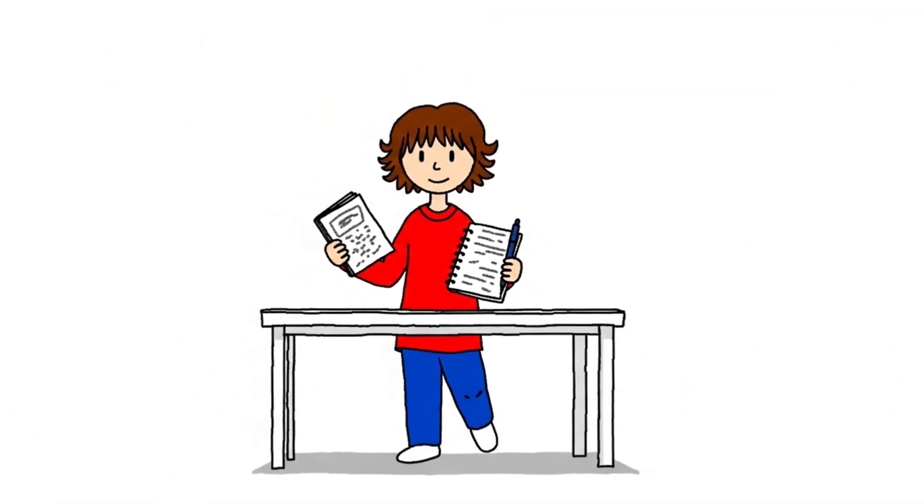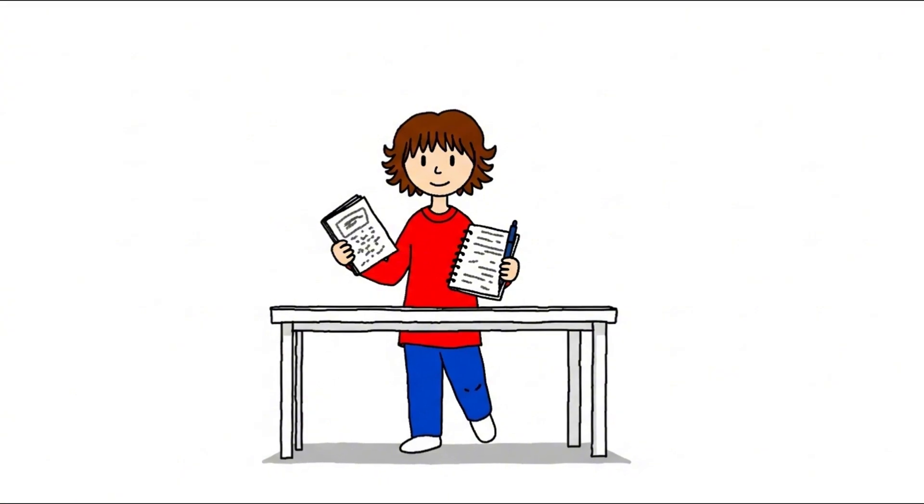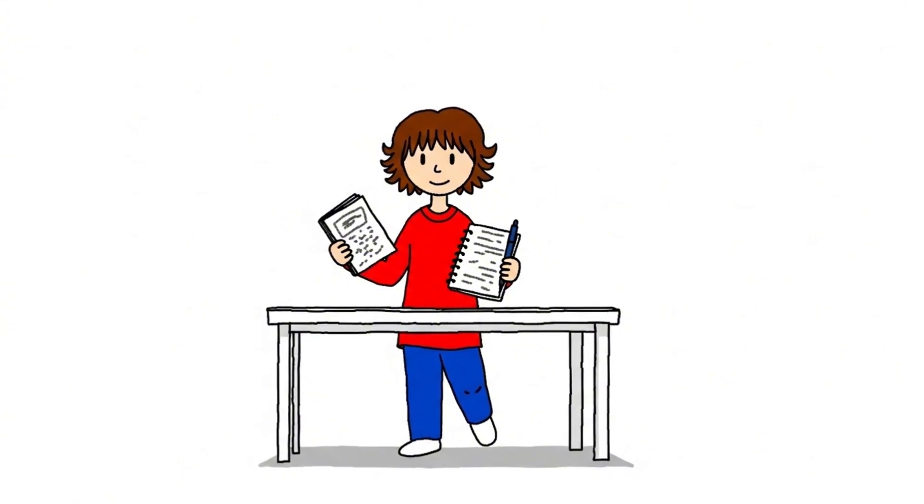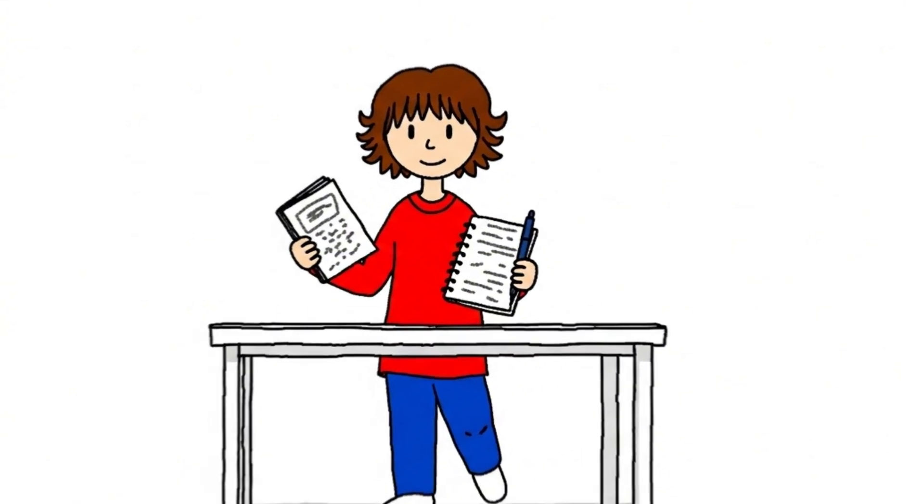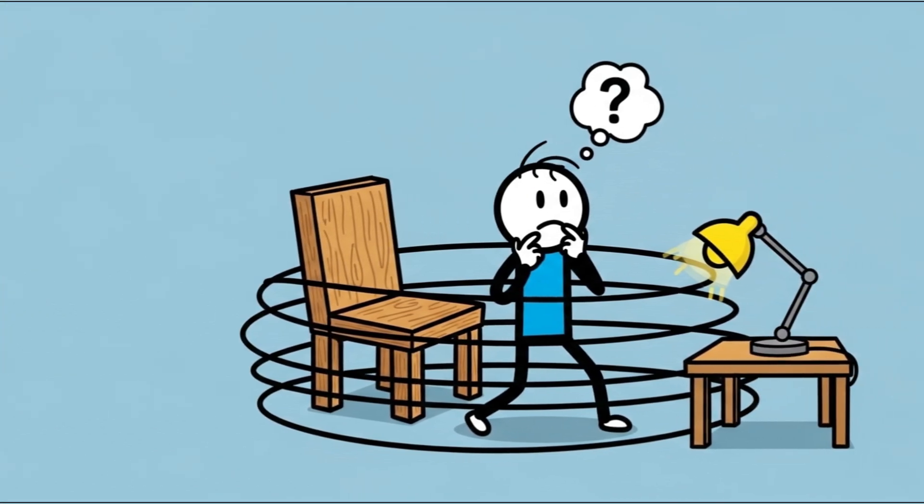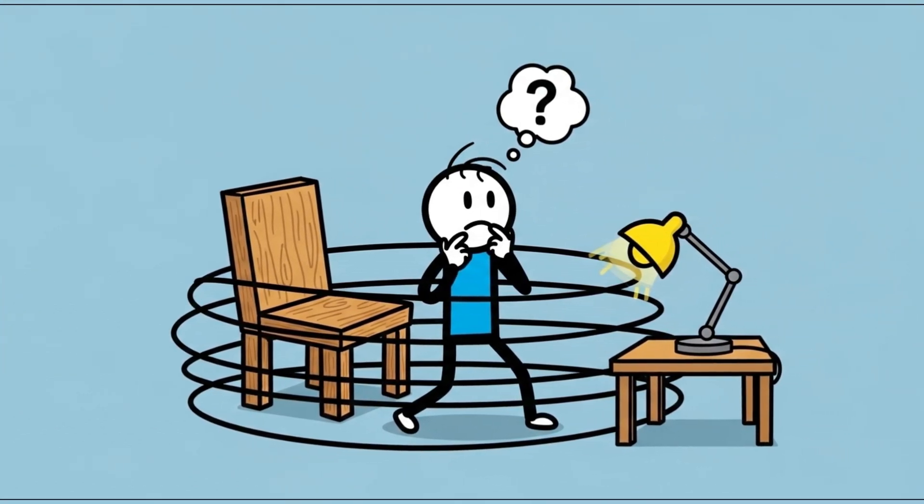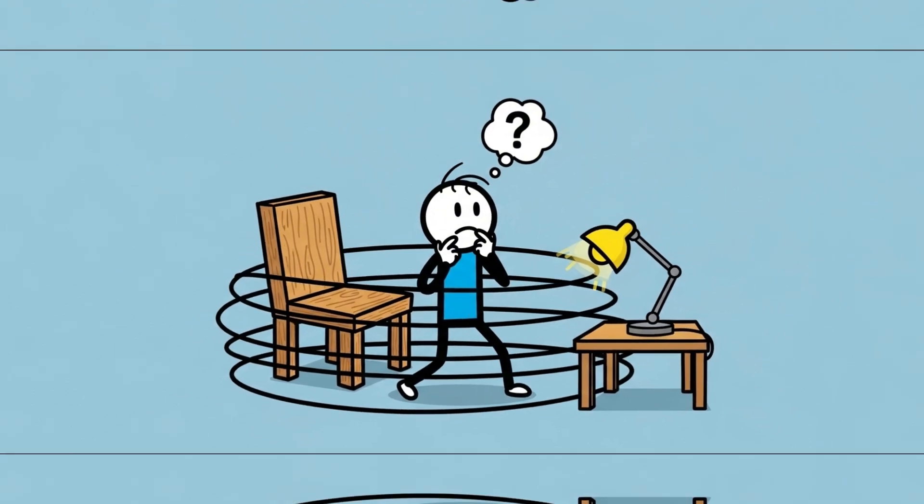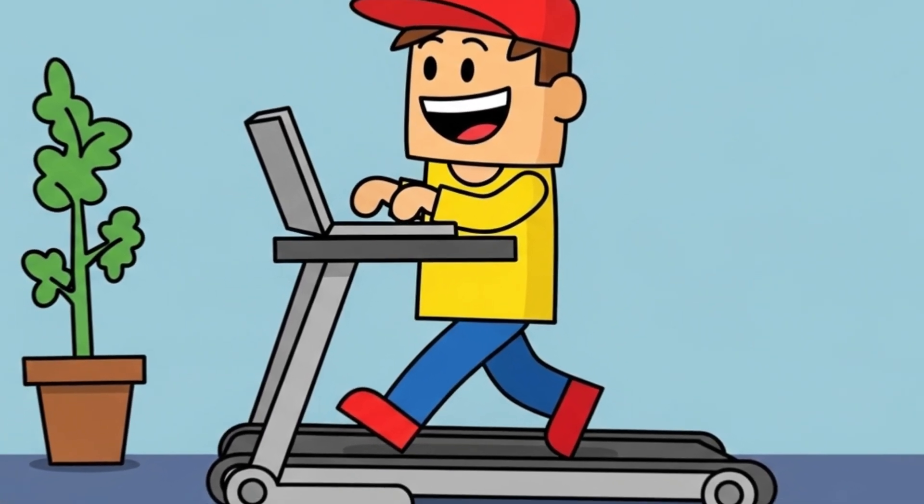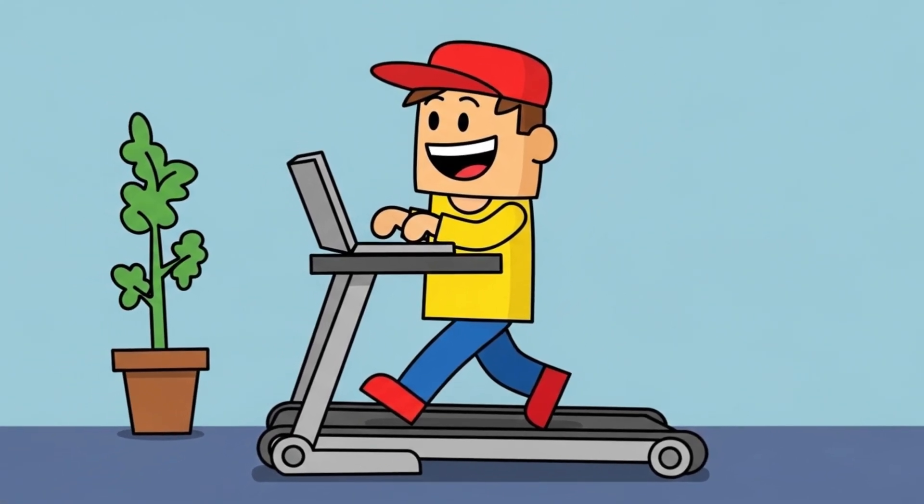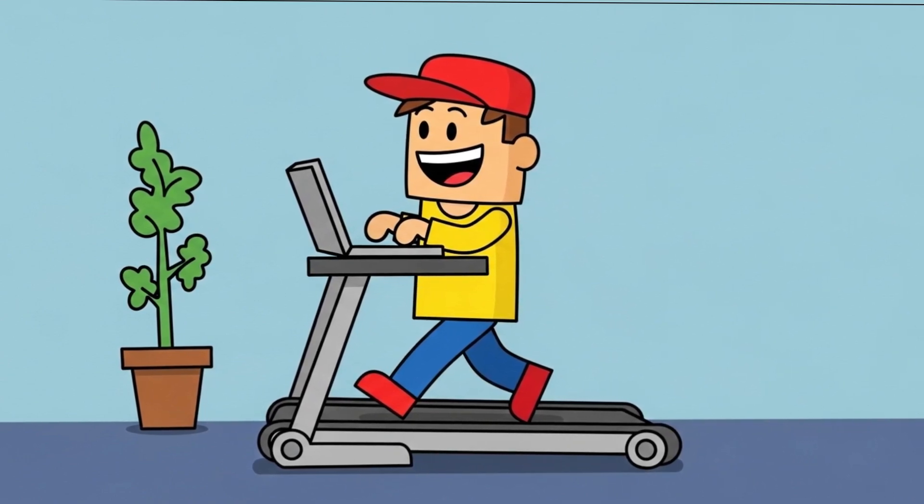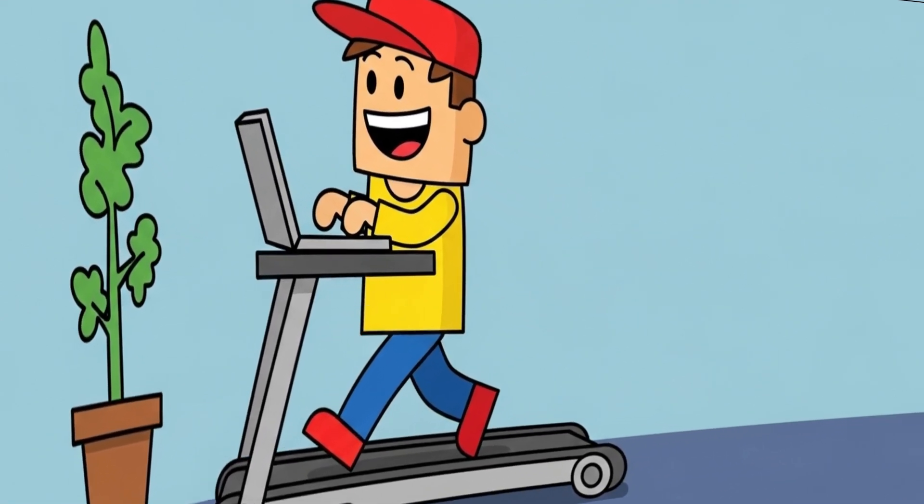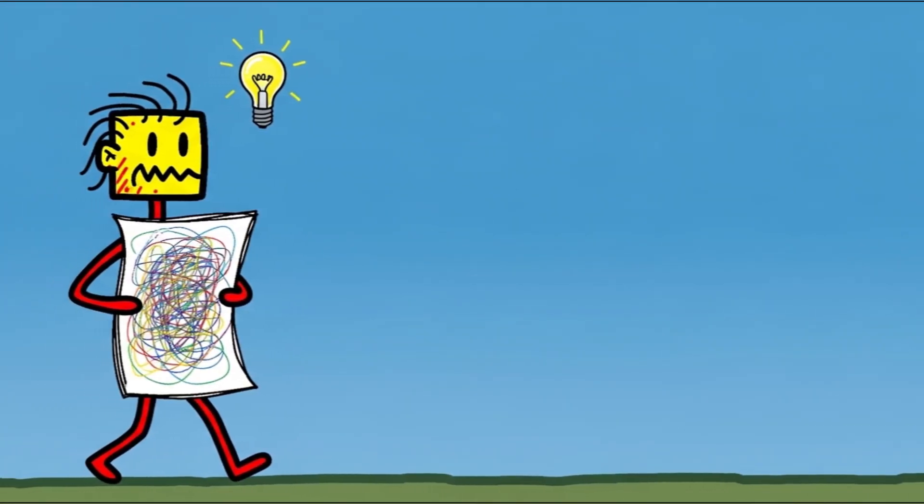Number six, the walking desk obsession. Long before Silicon Valley marketed treadmills for productivity, certain scientists and writers were already pacing their way through ideas, literally. Vladimir Nabokov drafted entire novels while walking in circles. Nikola Tesla would supposedly walk 8 to 10 miles every evening, stopping only to jot down sudden bursts of inspiration.